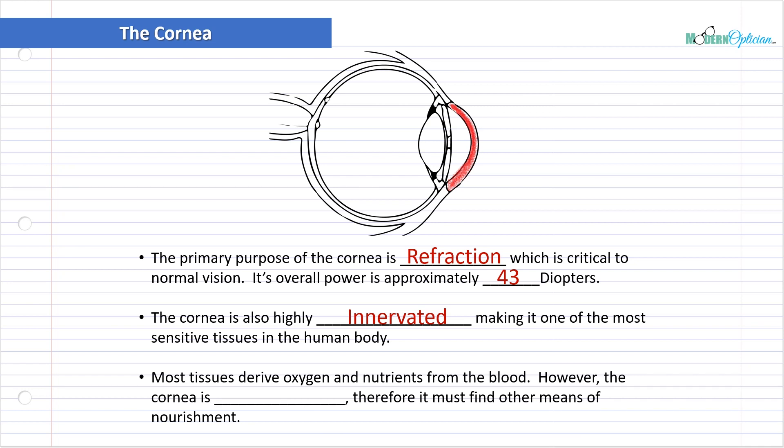Most tissue in the body derive oxygen and nutrients from the blood. This should not be news to you. Every tissue, the organs, everything has blood vessels and capillaries running through to make sure the tissue is permeated with blood because that is the main source of oxygen and nutrients. Interestingly, the cornea is one of the only tissues in the entire body that does not have blood vessels coursing through it. It's avascular and must find other means of nourishment.